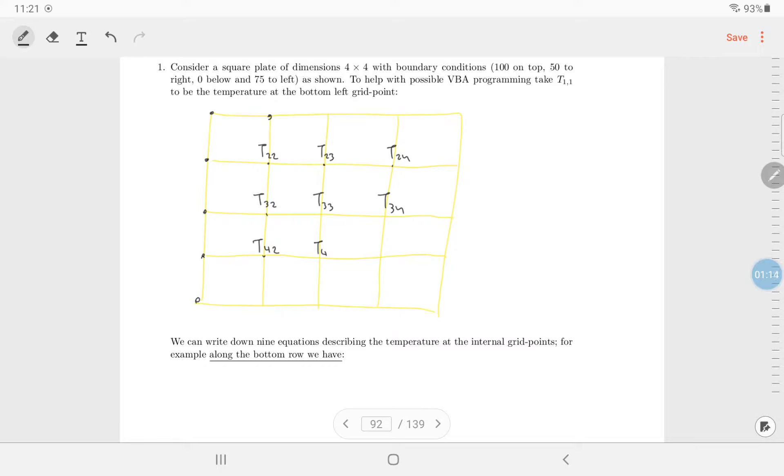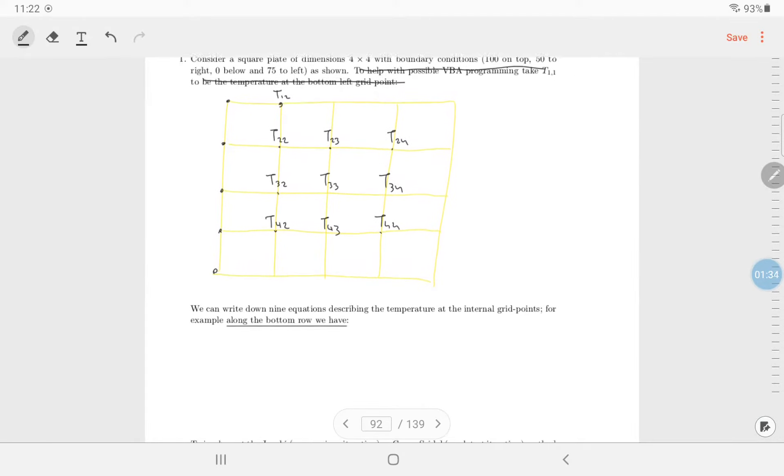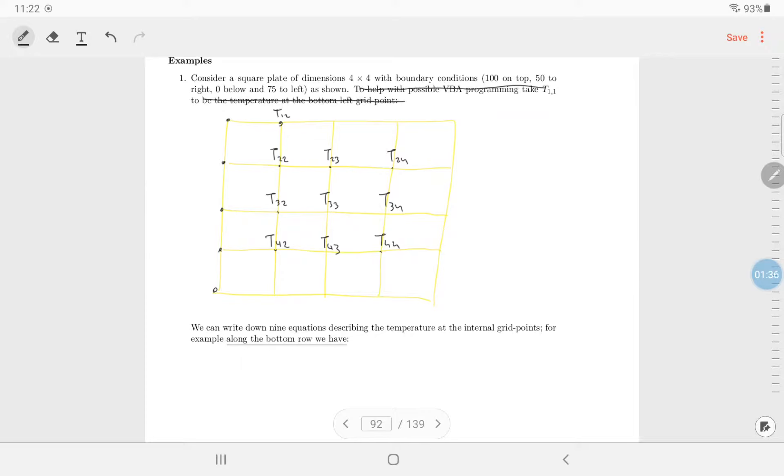Now you might say, oh, but that's the third row, but actually the boundary temperatures would go in the first row. Okay. So we might have to adjust something on the next page. So this is the grading I suggest. So you can write down nine equations describing the temperatures. Let's look at the boundary temperature. So 100 on top, 50 to the right, zero below and 75 to the left.